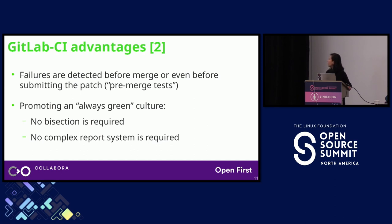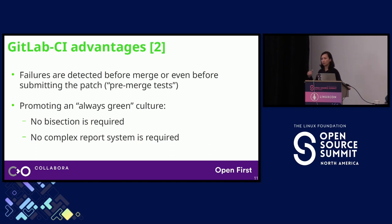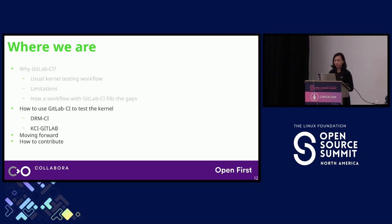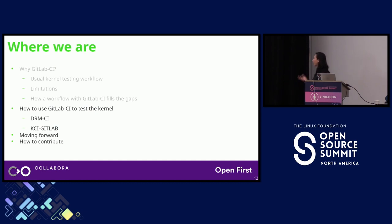Failures are detected before merge or even before submitting the patch — we call these pre-merge tests. When we promote an always-green culture, all tests must be passing before your patch set, and must continue to pass with your patch set. So when you test your patch set and see a problem, it's a problem of your patch set — no bisection is required and no complex reporting system is required. Now, let's move on to actual implementations: first DRM CI and then KCI GitLab.